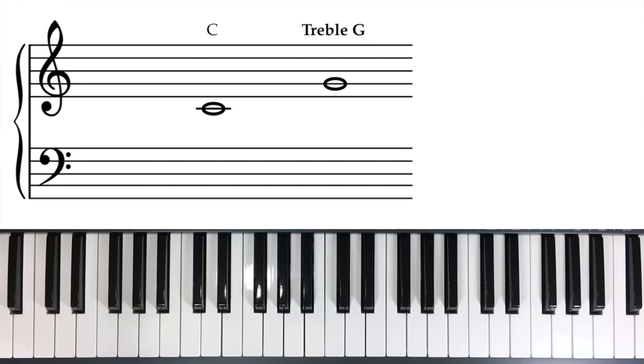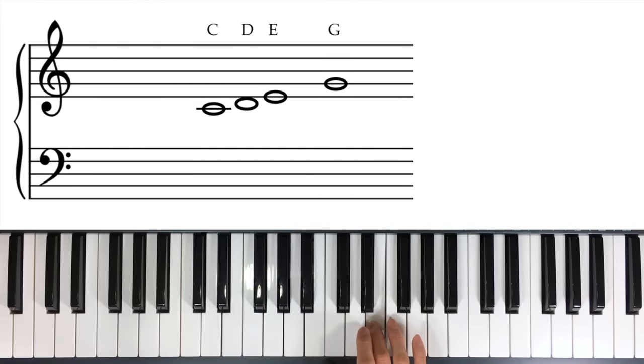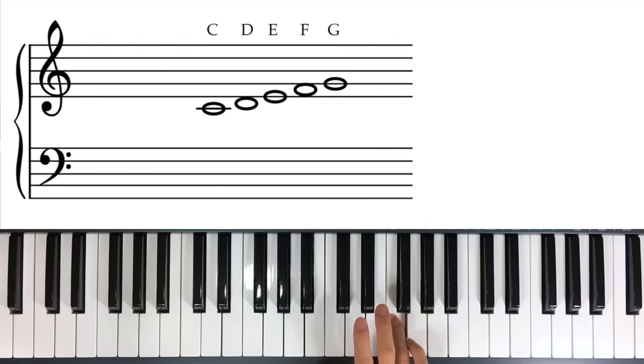Now our next landmark is treble G. See, it's going to be the second line from the bottom in the treble clef. So the second line from the bottom is treble G. Now see how we can connect the two landmarks. You have middle C, then above that you have D, right line to space, then you have the next line E, and then you have space F, and then look, you're at G.